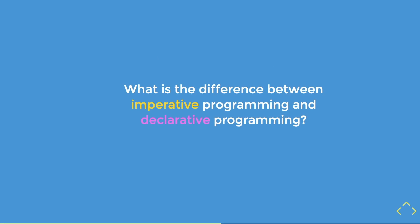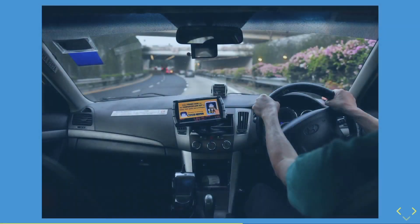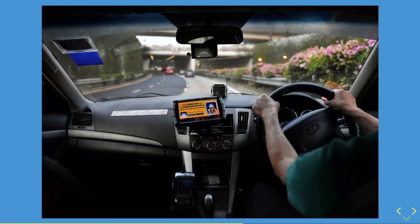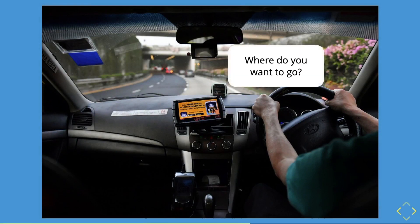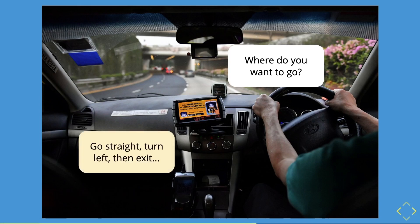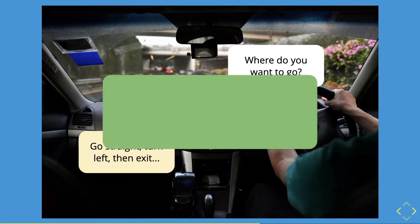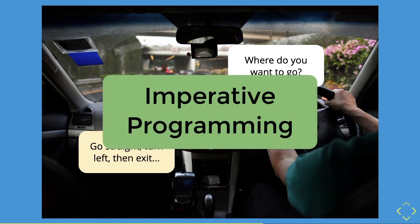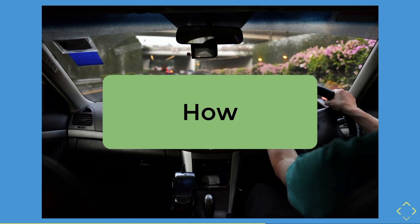Let me explain imperative programming first. Let's say you were in a taxi and the taxi driver asks you, where do you want to go? And you replied: go straight, then left, then exit after the school. This example is imperative programming. What you have done is give instructions to the taxi driver because you assume the driver has no idea where to go. You could say that this is the 'how' of problem solving.